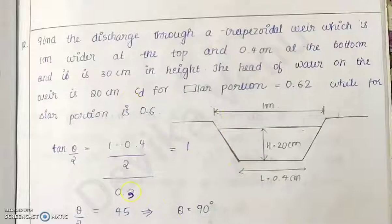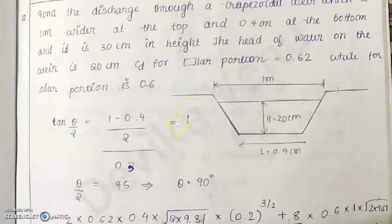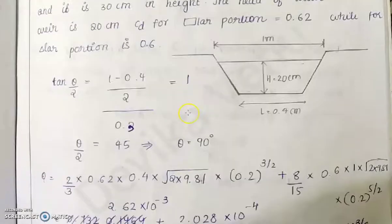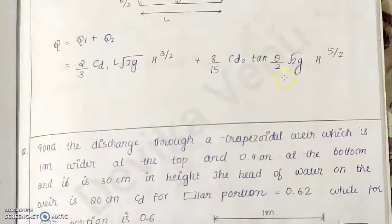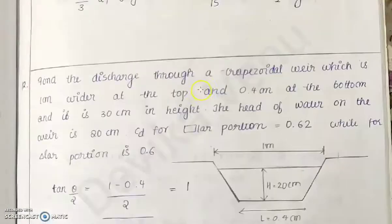The adjacent side is 30 centimeters, that is 0.3 meters. So tan θ/2 value is 1. I got the value tan θ/2 = 1. So you can directly substitute in this equation.